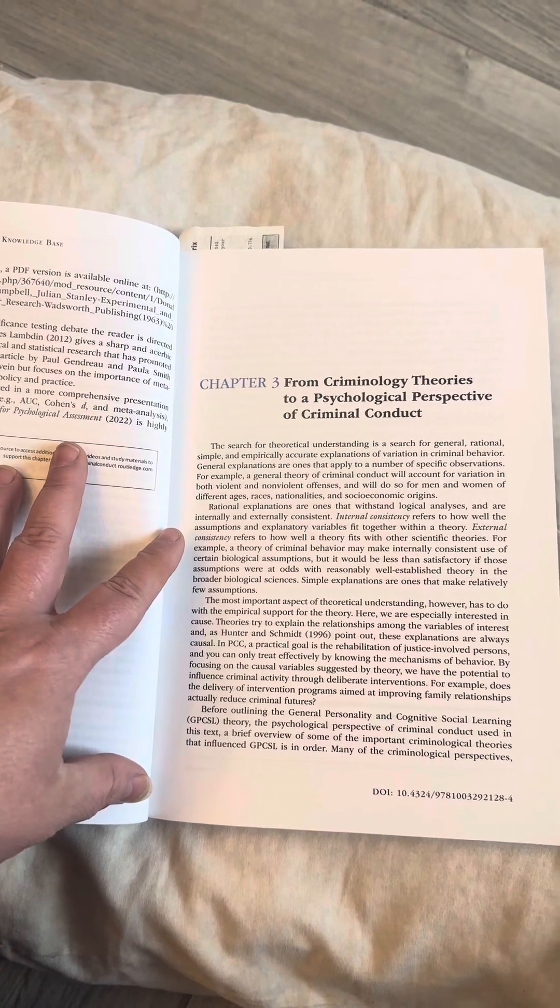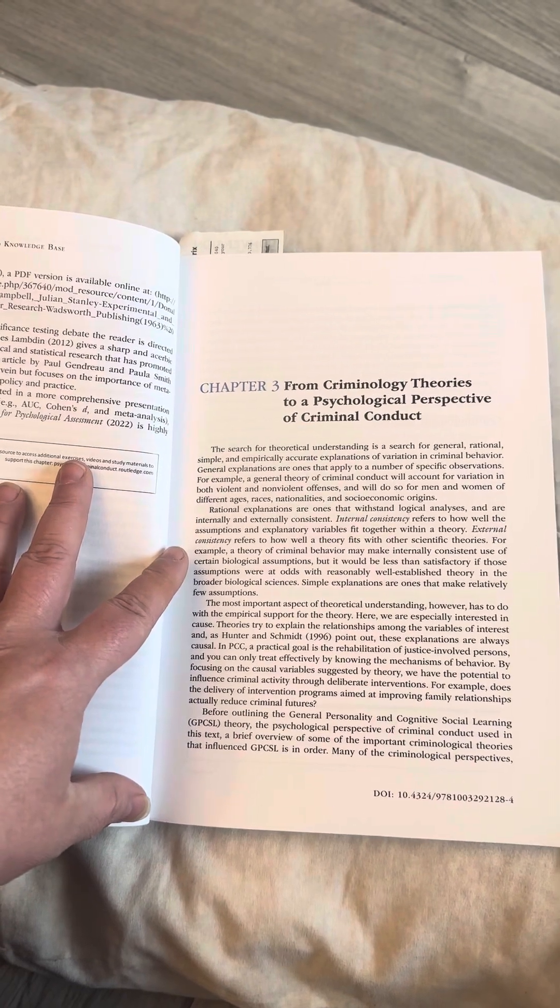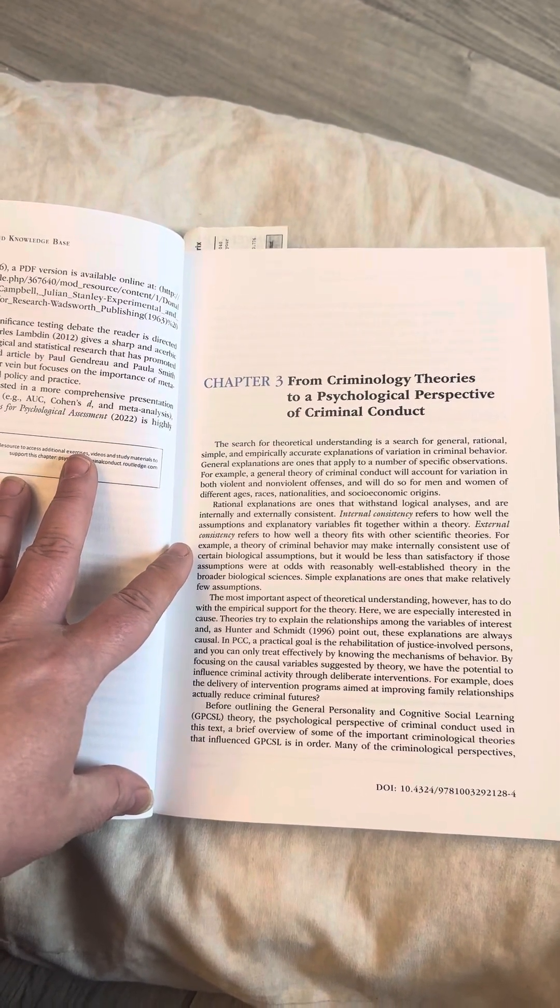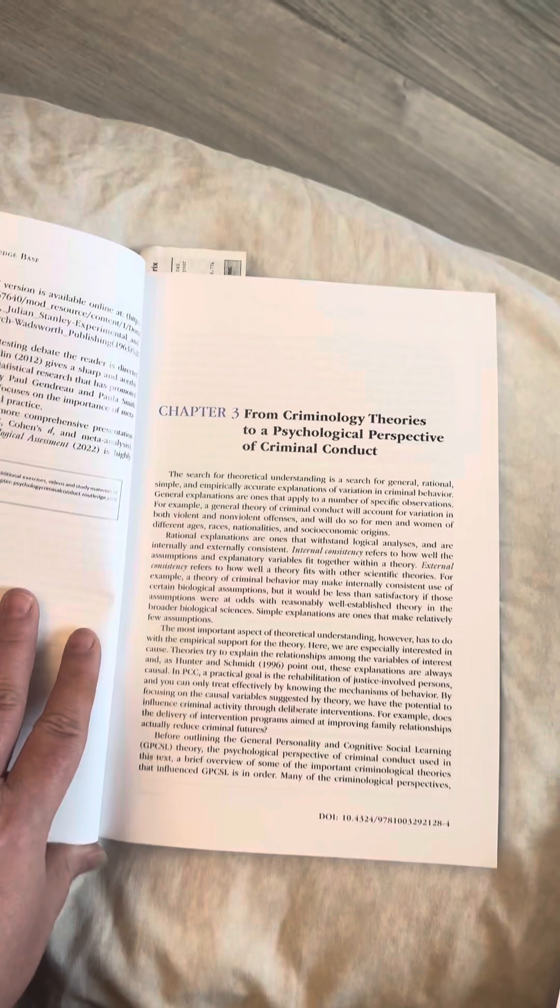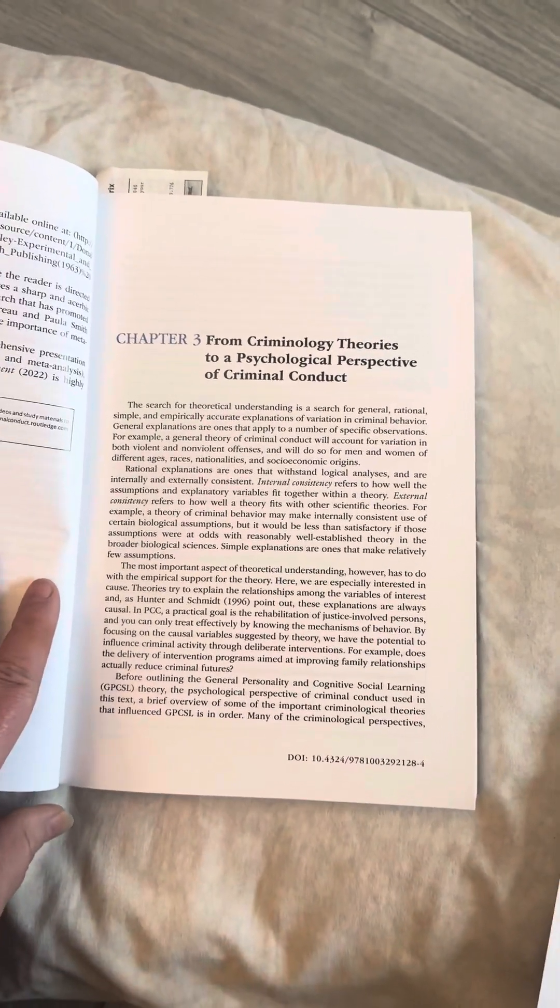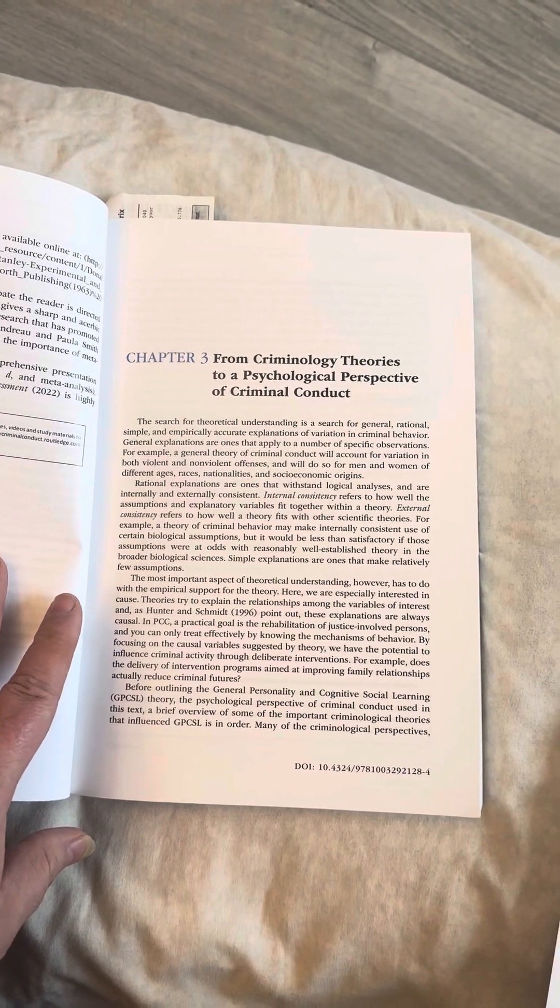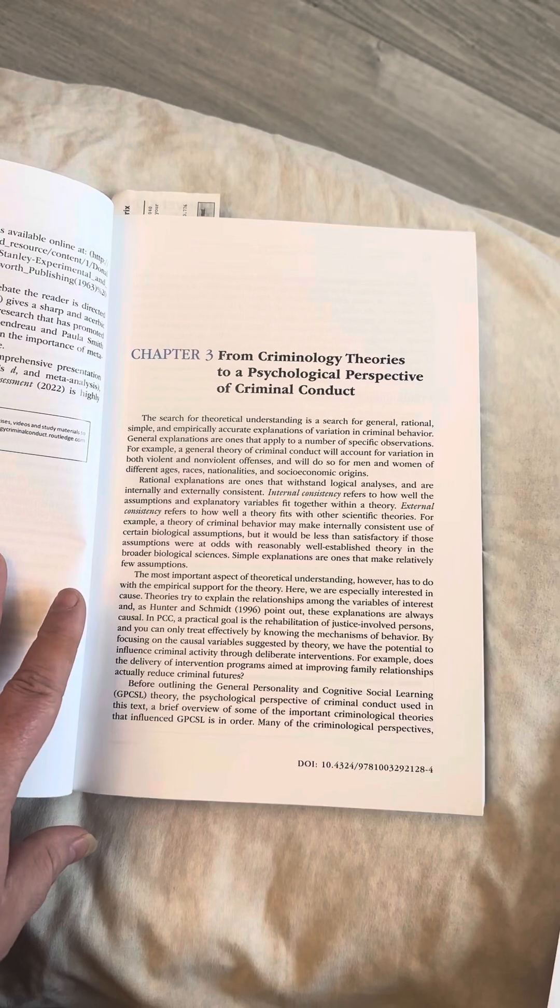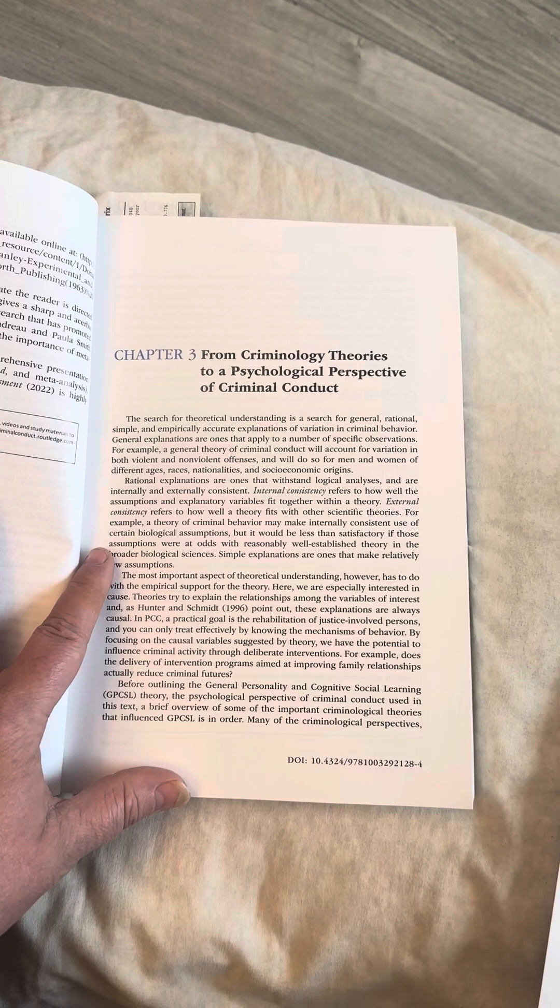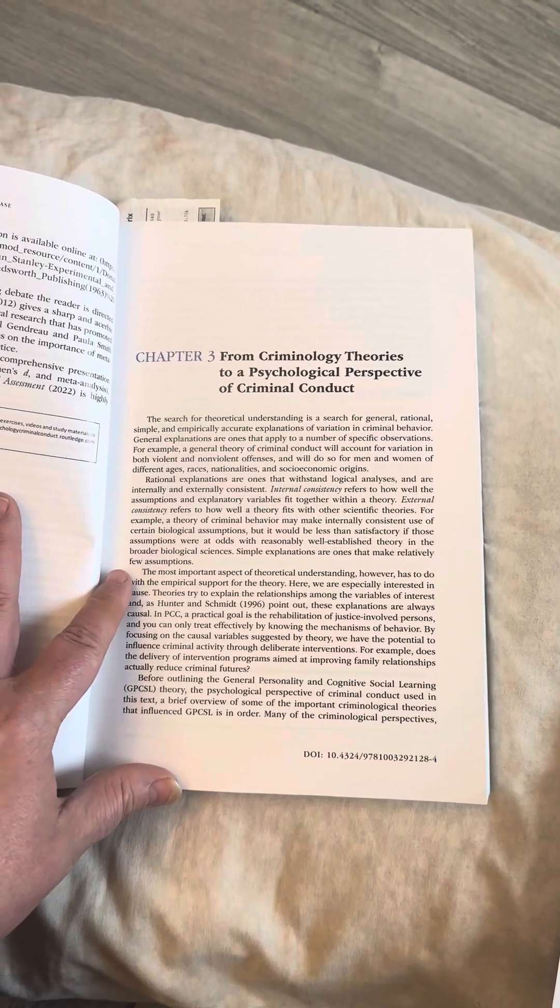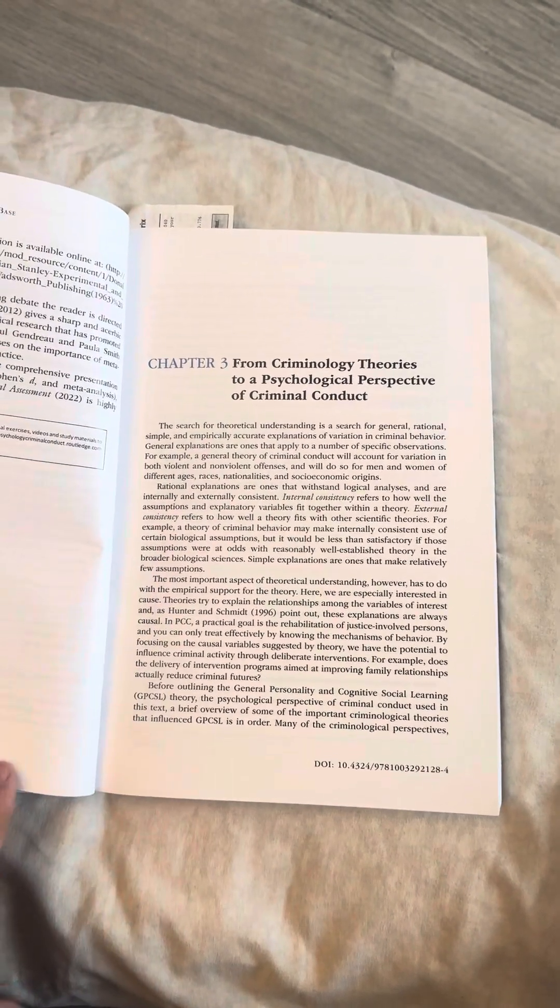Rational explanations are ones that withstand logical analysis and are internally and externally consistent. Internal consistency refers to how well the assumptions and explanatory variables fit together within a theory. External consistency refers to how well a theory fits with other scientific theories. For example, a theory of criminal behavior may take internally consistent use of certain biological assumptions, but it would be less than satisfactory if those assumptions were at odds with reasonably well-established theory in the broader biological sciences.